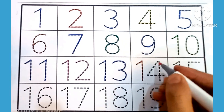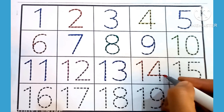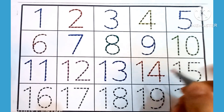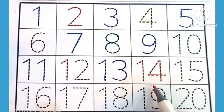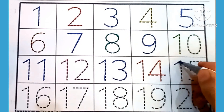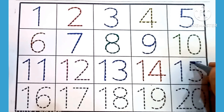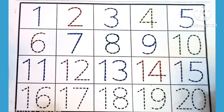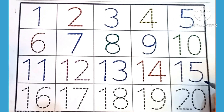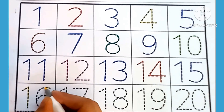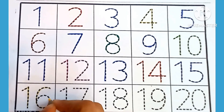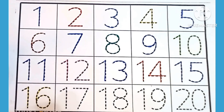Fourteen: one, four — which is this number? Fourteen. Fifteen: one, five — which is this number? Fifteen. Sixteen: one, six — which is this number? Sixteen.